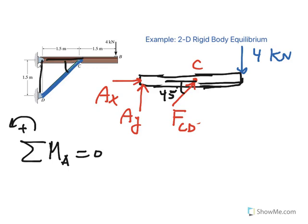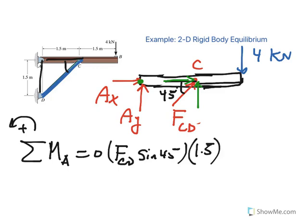So taking moment is very easy. There are two components of this guy, the FCD: the Y component and X component. X component is lined up with point A, so it doesn't have any moment. So only the Y component, which is FCD sine 45, and we're going to multiply that by the moment arm, which is one and a half meters, and that's going counterclockwise, positive. And then four kilonewton times three meters going clockwise, so that's negative.